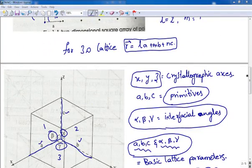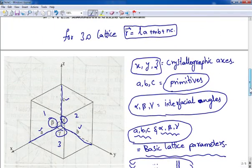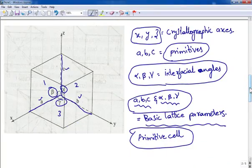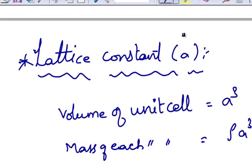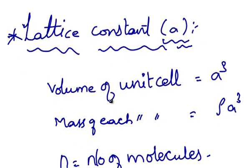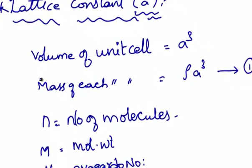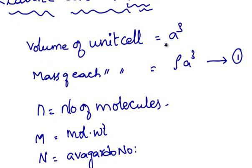Now that we know about lattice parameters, let us calculate the lattice constant. Lattice constant is denoted by a letter small a. Let us get started. A volume of a unit cell can be represented as A cube because a unit cell is assumed to be in the shape of a cube. The volume of a cube is A cube. Mass of each unit cell is density of unit cell into volume of unit cell, that is rho into A cube.